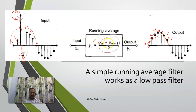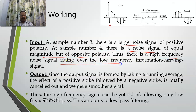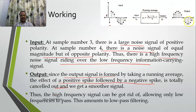To get a better result, use more coefficients and more samples. The reason this works: at sample three there is a large noise spike, and at sample four there is an equal-magnitude noise spike of opposite polarity — a high-frequency noise signal riding over the low-frequency information. Since the output is formed by taking a running average, the effect of a positive spike followed by a negative spike is cancelled out, giving a smoother signal. This is how a low-pass filter works.